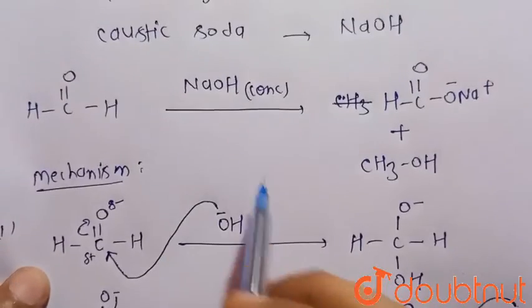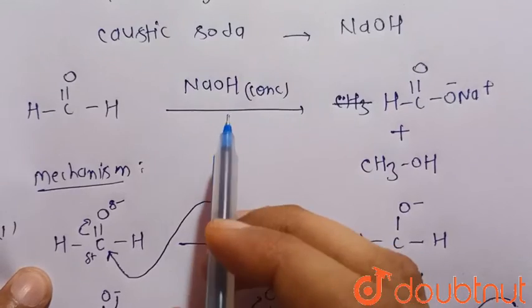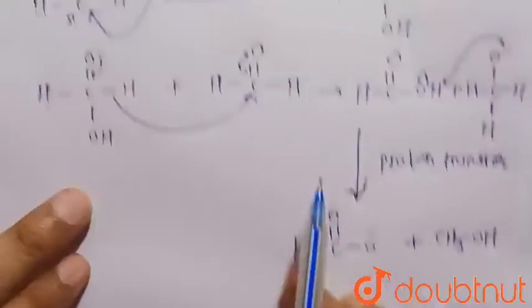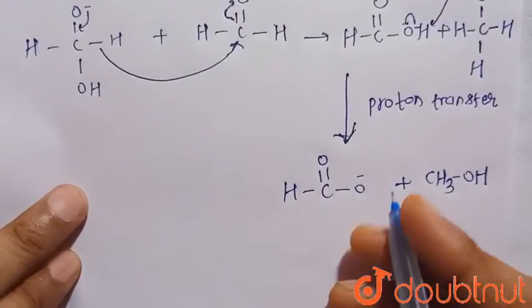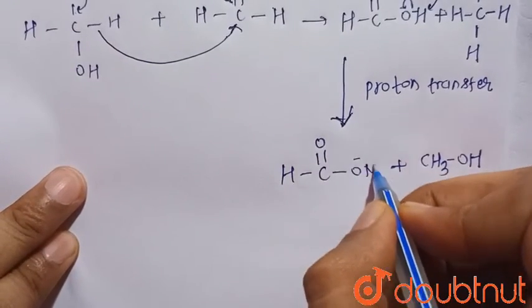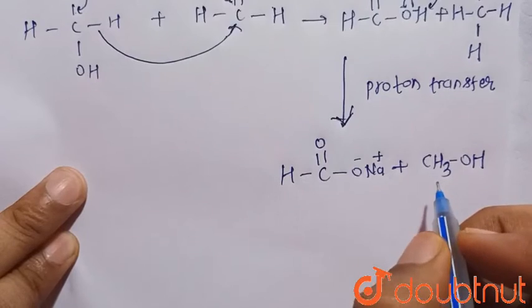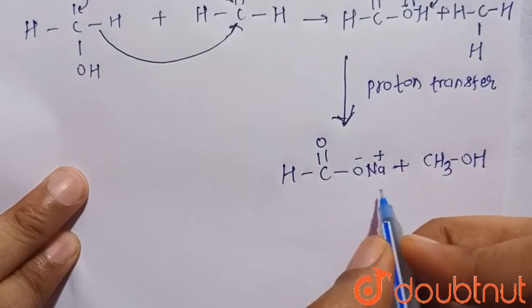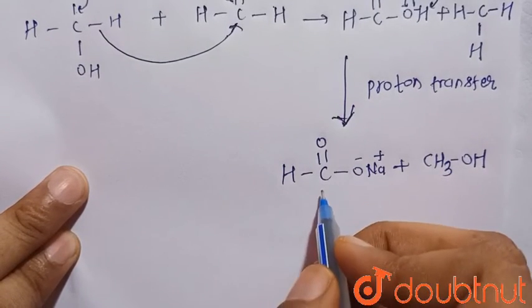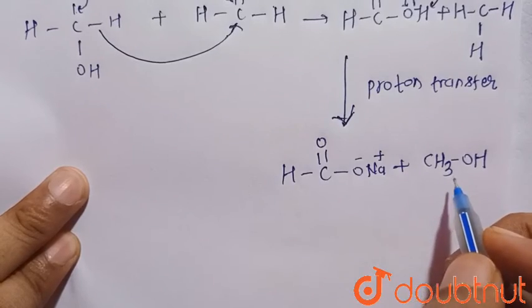Since we initially took NaOH, Na plus will combine with this O minus, so we can write Na plus also. That is H-C double bond O minus Na plus. So this is the oxidized product and this is the reduced product. This is sodium formate and this is methanol.